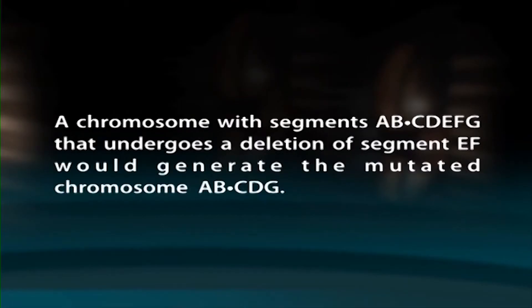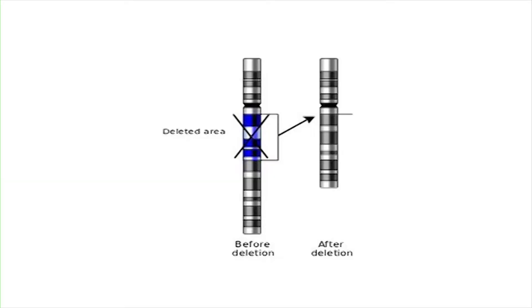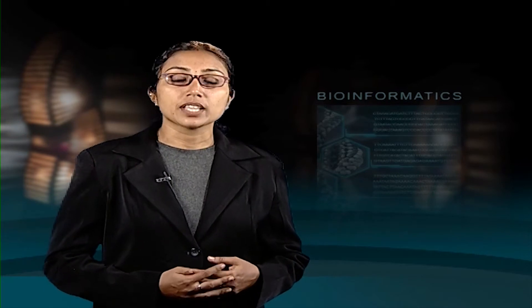Deletions. A second type of chromosome rearrangement is a deletion — the loss of a chromosome segment. A chromosome with segments AB·CDEFG that undergoes a deletion of segment EF would generate the mutated chromosome AB·CDG. A large deletion can be easily detected because the chromosome is noticeably shortened. In individuals heterozygous for deletions, the normal chromosome must loop out during the pairing of homologues in prophase one of meiosis to allow the homologous regions of the two chromosomes to align and undergo synapsis. This looping out generates a structure that looks very much like that seen in individuals heterozygous for duplications.